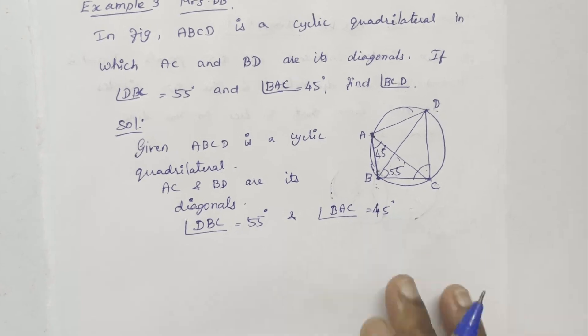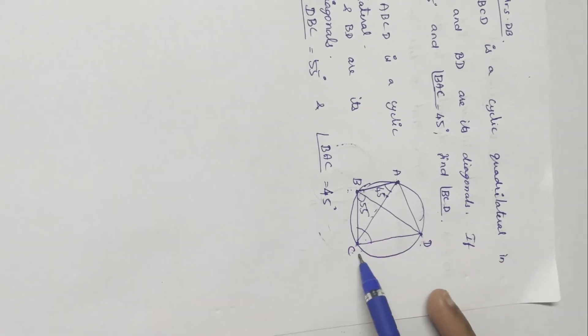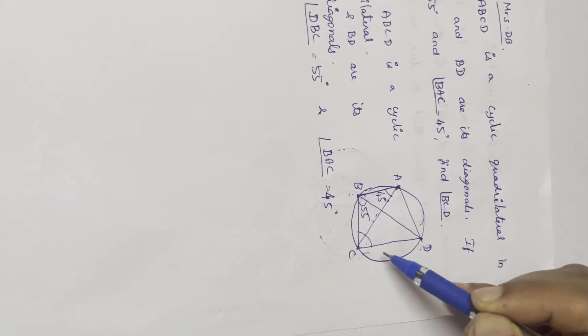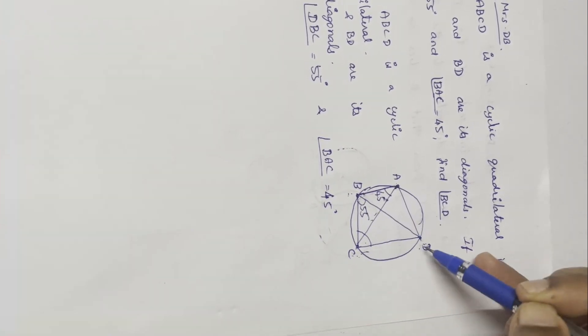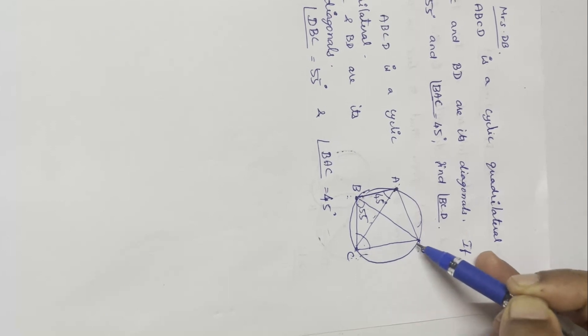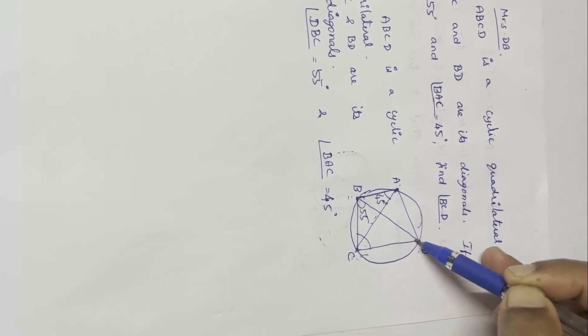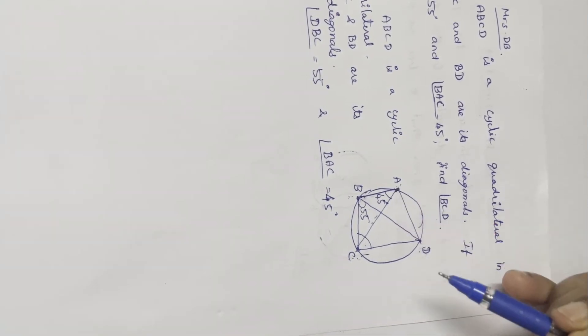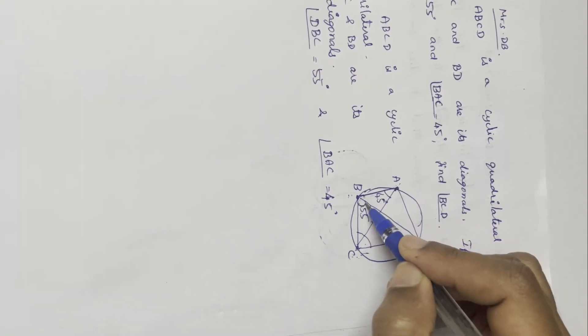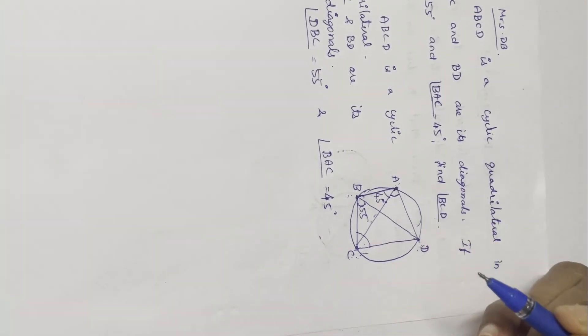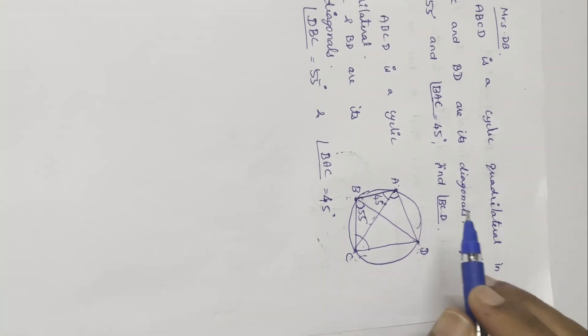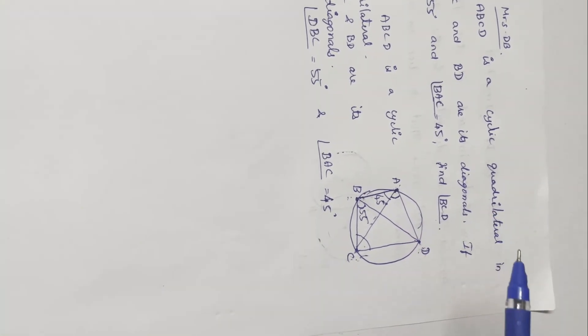Now, consider the arc CD. Angle DBC and angle DAC lie on the same segment. Angles in the same segments are equal.